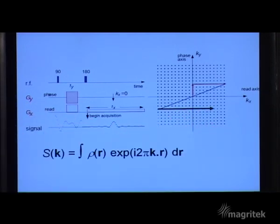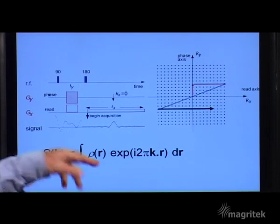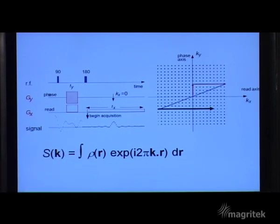There is that expression for the signal again. The signal is acquired in a two dimensional matrix of k-space. The thing we want of course is the image in a two dimensional matrix of real space.